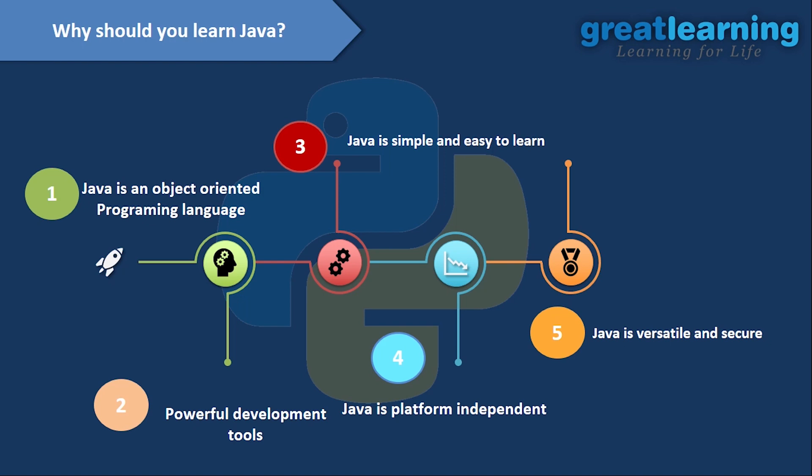Java is versatile and secure because it is an object-oriented language and converts your code to bytecode. These are the main reasons you should learn Java. Now we'll see why Java is gaining popularity — it has the largest community for learners and collaborators. Java is open source and free; you don't need to pay anything to use it. It is easy to learn, and the flexibility for users is high.